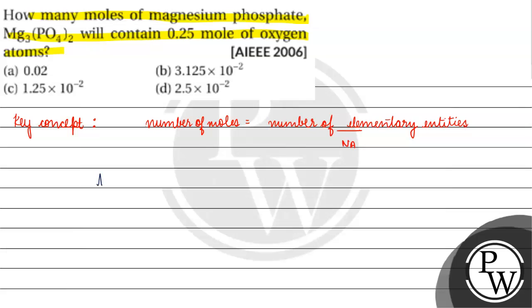Let's talk about one molecule of magnesium phosphate. How many oxygen atoms will there be? There will be 8 oxygen atoms.